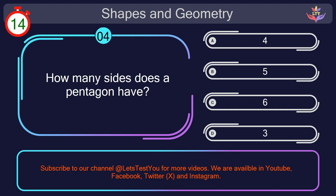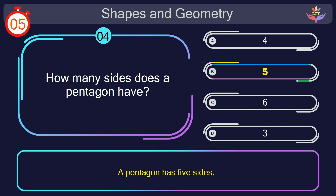Question number 4. How many sides does a pentagon have? Your countdown started. Here we go. The correct answer is option B. 5. A pentagon has 5 sides.